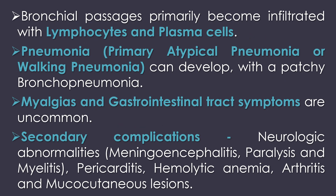The bronchial passages primarily become infiltrated with lymphocytes and plasma cells. Pneumonia, referred to as primary atypical pneumonia or walking pneumonia, can also develop with a patchy bronchopneumonia. Myalgias and gastrointestinal tract symptoms are uncommon. Secondary complications include neurologic abnormalities like meningitis, encephalitis, paralysis, and myelitis, as well as pericarditis, hemolytic anemia, arthritis, and mucocutaneous lesions.